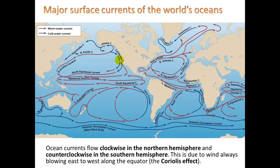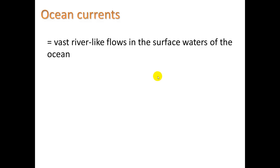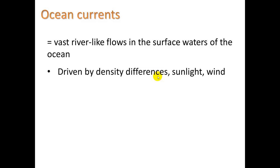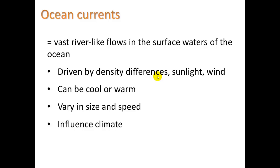These currents are important. In California, the water is pretty cold because it's coming down from a northern area, whereas on the east coast — in Florida or other places along the eastern seaboard — the water is warm because it's coming up from the equatorial region. Ocean currents are a vast river-like flow of water on the surface of the ocean, driven by density differences and mostly by wind. They vary in size and speed and influence climate. When we experience El Niño every seven years or so, that is due to a shift in ocean currents.